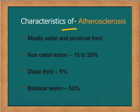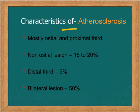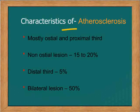On angiography, atherosclerotic lesions are mostly ostial or in the proximal third. They may be non-ostial lesions in 15-20%, and may rarely be seen in the distal third in 5% of patients. They tend to be bilateral in 50% of patients.